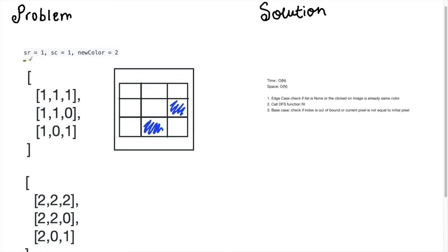We are given an initial source row and source column, which are both 1 and 1. If I locate that in this 2D matrix — row 0, 1, 2 and column 0, 1, 2 — it would be position [1][1]. This is the initial index given to us, and we are asked to color this to a different color, which is 2. So we need to color not only this cell but every cell it is connected to in up, down, left, and right directions to this new color.